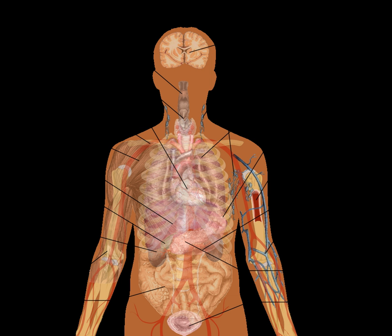In conifers, the organ that bears the reproductive structures is called a cone. In other divisions, phyla, of plants, the reproductive organs are called strobili in lycopodiophyta, or simply gametophores in mosses.